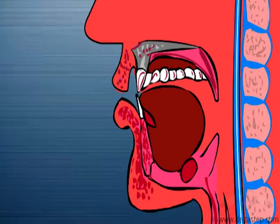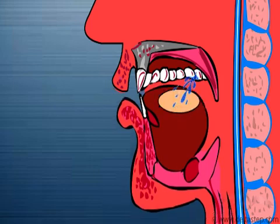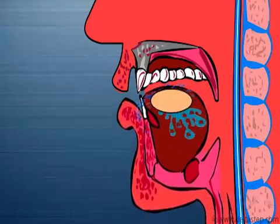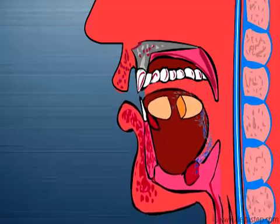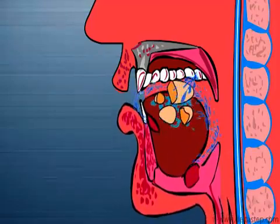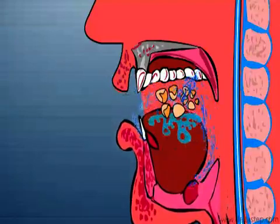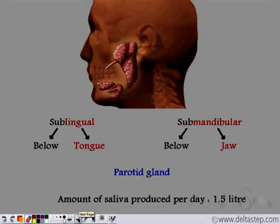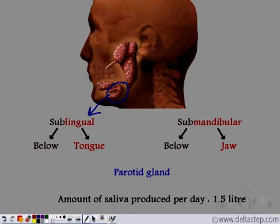Where does saliva originate from? Saliva originates from three areas in the mouth, and helps in the smooth passage of food down the esophagus. The salivary gland present under the tongue is known as the sublingual gland. 'Sub' means below and 'lingual' means tongue.